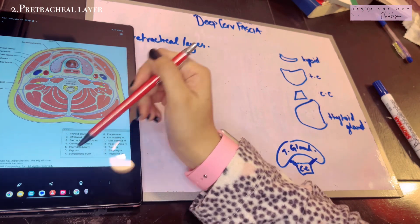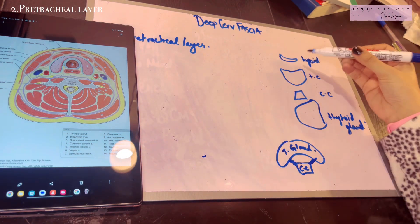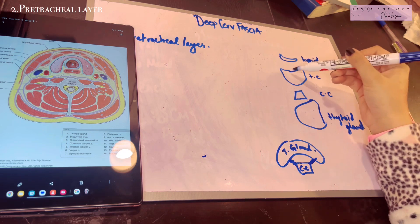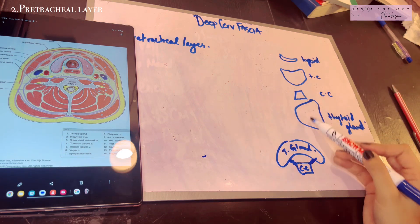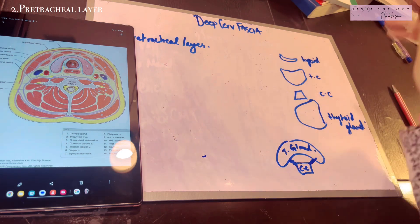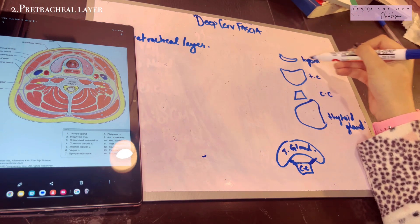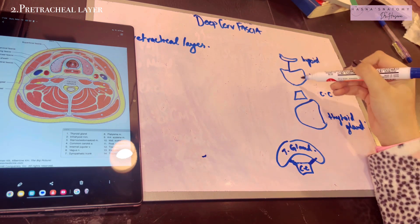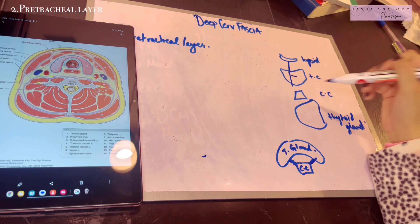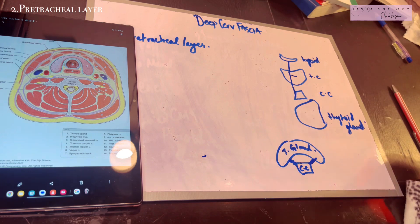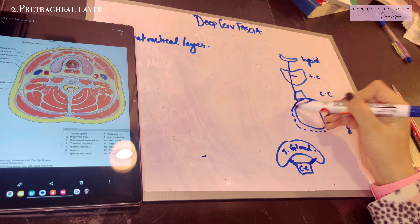The attachments of the pre-tracheal layer: superiorly it is attached to the hyoid bone, then to the thyroid cartilage — more specifically the oblique line of the thyroid cartilage — then the cricoid cartilage, and then it goes down to enclose your thyroid gland.